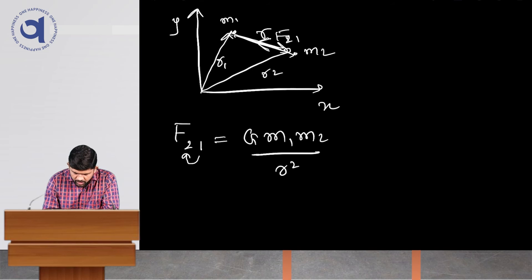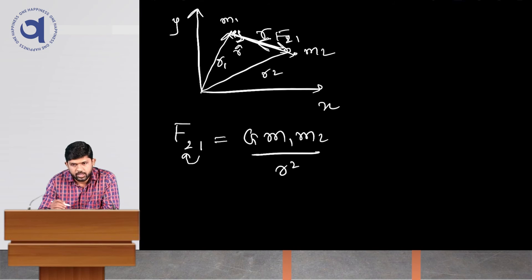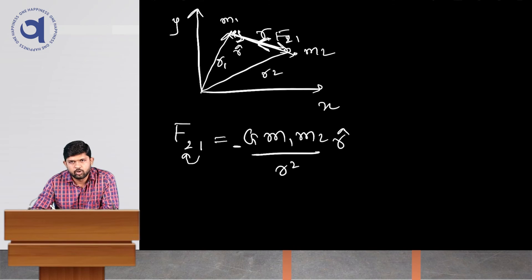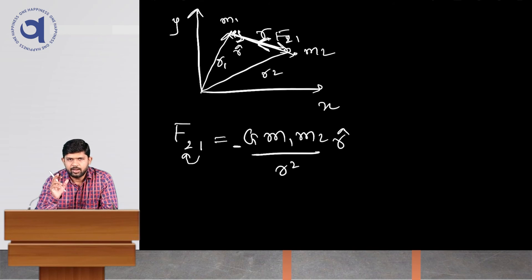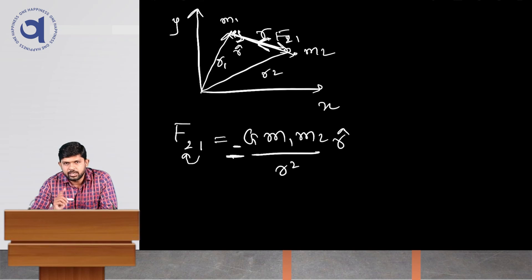If we consider the unit vector in the direction of position vector R, we call it R-cap. The force F21 is in the opposite direction of unit vector R-cap, so we include a negative sign. This minus sign indicates that the gravitational force is attractive in nature. This is another very important point about the law of gravitation: gravitational force is always attractive, never repulsive. The minus sign indicates this attractive nature.